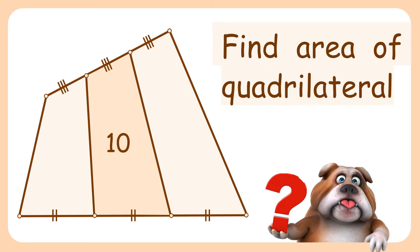In today's interesting question, a quadrilateral is given where the opposite sides are trisected, and joining these points the quadrilateral is divided into three parts. The area of the middle part is given as 10 cm². Using this data, we have to find the area of the full quadrilateral.